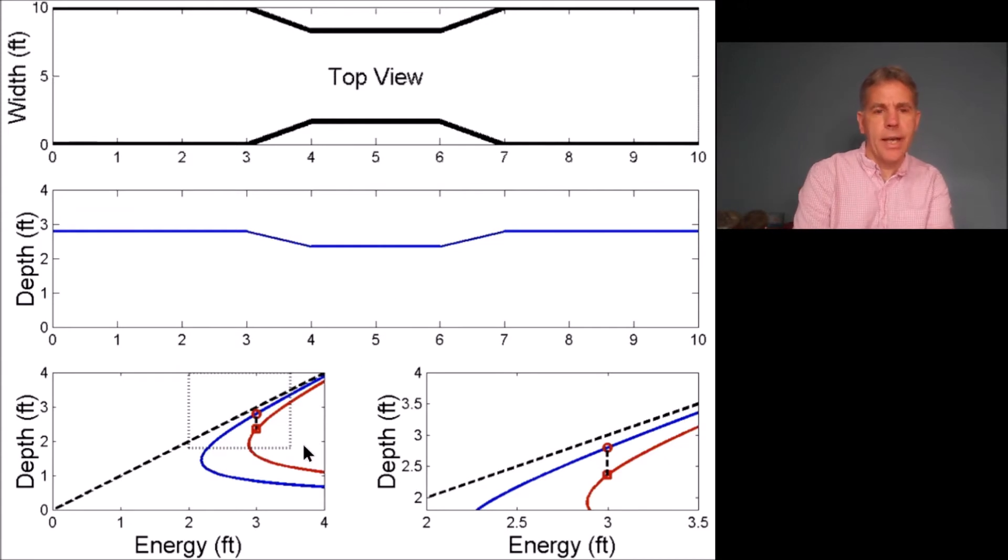I've paused it and now you can see there are clearly two EY diagrams. The red EY diagram corresponds to flow in the constriction, and it's a little difficult to see but there's a small vertical element here that is emphasized better in this right diagram.